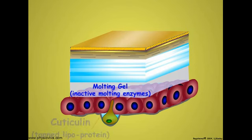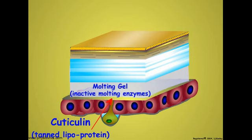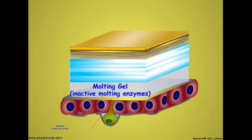A new outer epicuticle layer of cuticulin is secreted. This new cuticulin layer protects the epidermal cells and newly forming cuticle from digestion by the enzymes in the molting gel, which is then activated and becomes a fluid.